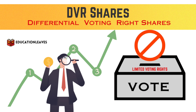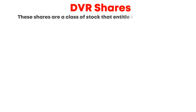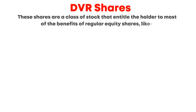The third type is Differential Voting Rights shares, or DVR shares. These are a class of stock that entitle the holder to most of the benefits of regular equity shares, like dividends and capital appreciation. However, DVR shareholders typically have fewer voting rights compared to regular shareholders. One advantage: higher dividends — to compensate for the lower voting rights, companies often offer higher dividend payouts to DVR shareholders, which can be attractive for income-focused investors.